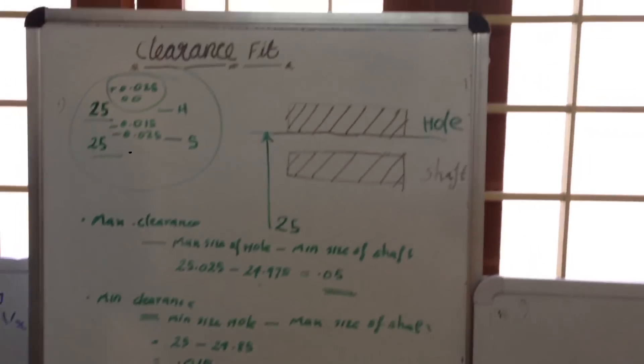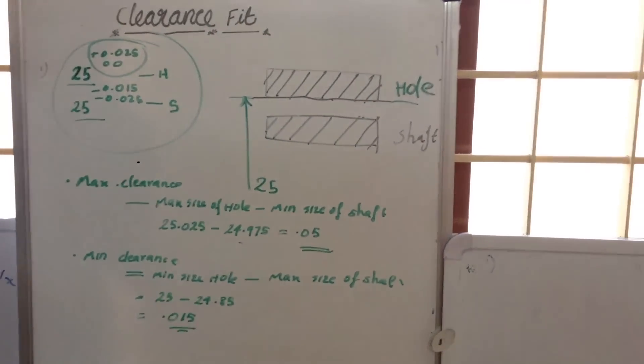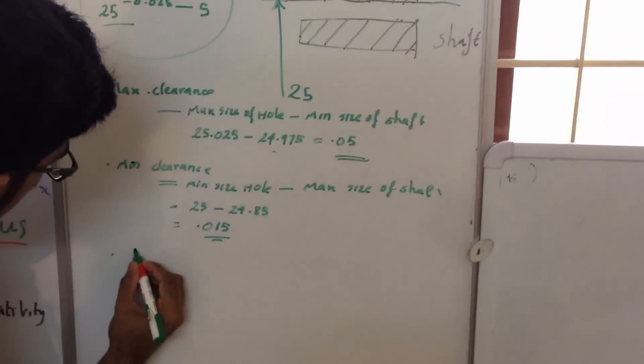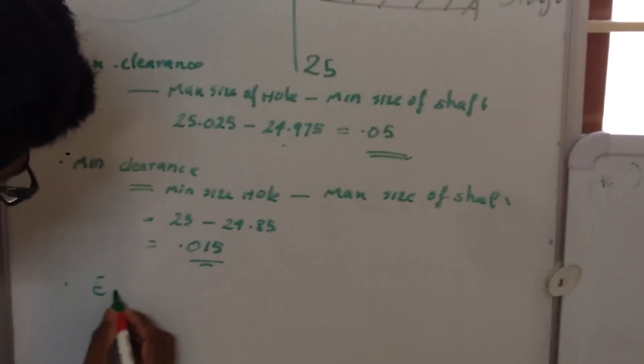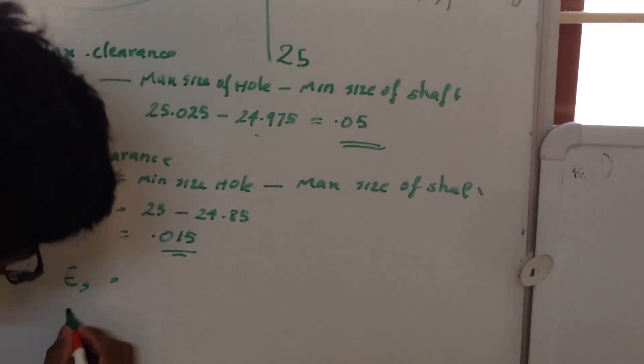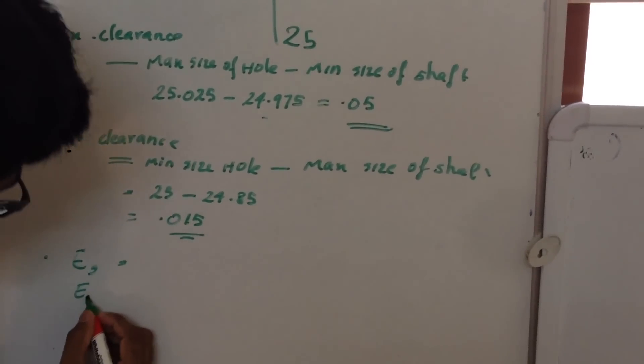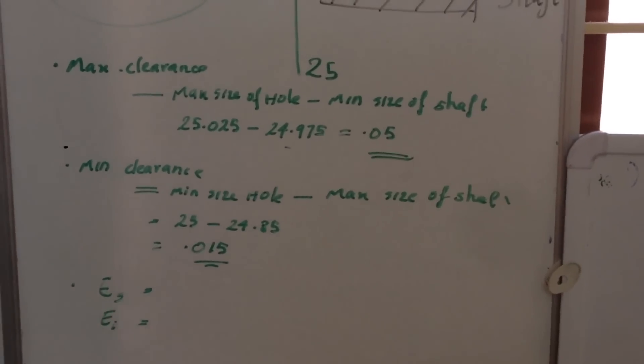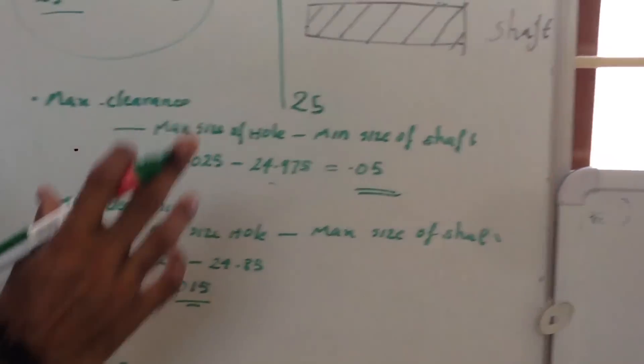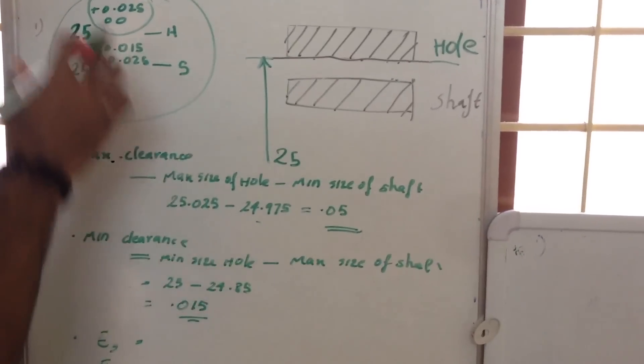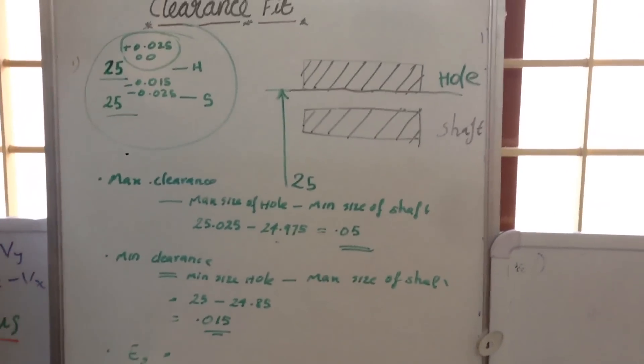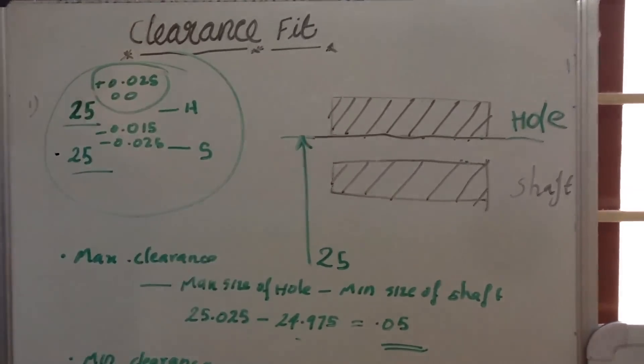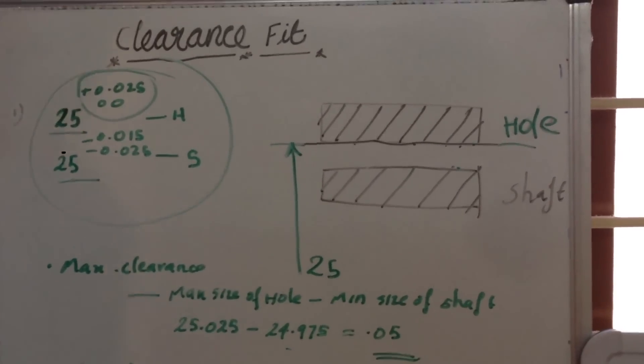For finding deviations, we represent the deviation of hole as ES, that is the upper deviation of hole, and EI is the lower deviation of hole. Deviation is always represented in algebraic terms, that can be plus or minus terms.